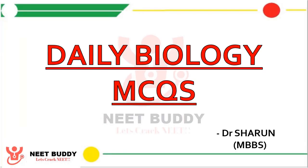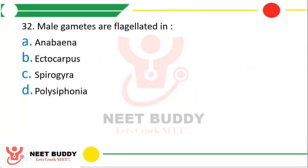Without wasting much time, let's get started. Question number 32: Male gametes are flagellated in — Option A: Anabaena, Option B: Ectocarpus, Option C: Spirogyra, Option D: Polysiphonia. The correct answer is Option B, Ectocarpus.